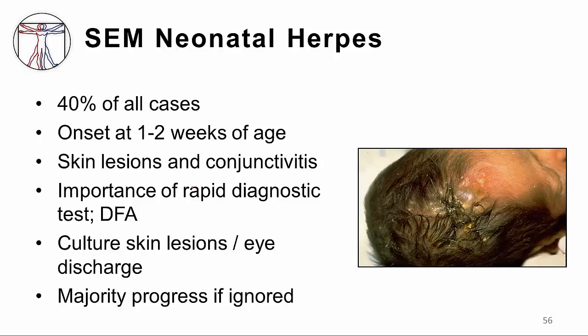Babies with SEM typically present between one and two weeks of age, although skin lesions, as demonstrated in the picture on this baby's forehead, may be present as early as the delivery room. The skin lesions are often associated with conjunctivitis. It is very important when one sees a baby with vesicular lesions to consider herpes and to undertake rapid diagnostic testing — for example, performing a DFA, a direct fluorescent antibody, on a sample of the vesicle fluid. If the diagnosis can be made and treatment initiated, the baby will do well; if not, the baby may progress to a more severe form of infection. In addition to rapid diagnostic tests, obtaining cultures from skin lesions and eye discharge is recommended.